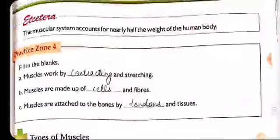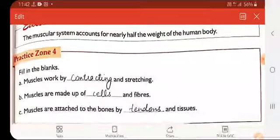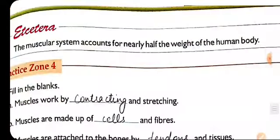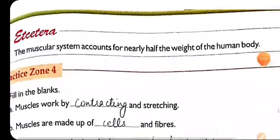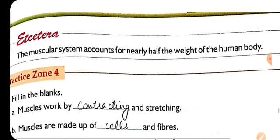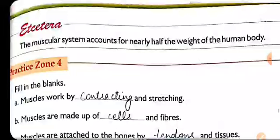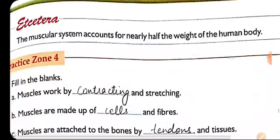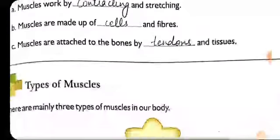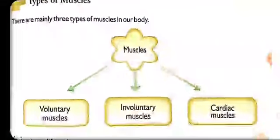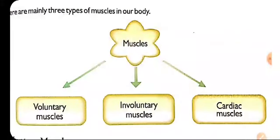The muscular system accounts for nearly half of the weight of the body — like if body weight is 40 kg, then about 20 kg of weight is due to the muscles which are present. Next comes the types of muscles. Basically, how many types of muscles are present in our body? There are three types: first is voluntary, second is involuntary, and third is cardiac muscles.